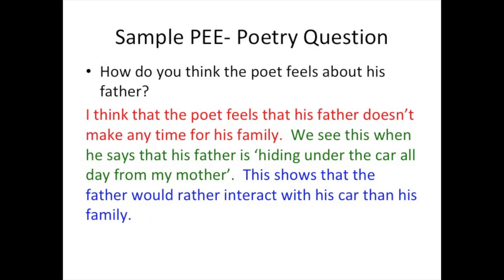Here is another sample PEE, this time for a poetry question. The question is: how do you think the poet feels about his father? The point is: I think the poet feels his father doesn't make any time for his family. The example is: we see this when he says that his father is hiding under the car all day. The explanation is: this shows that the father would rather interact with his car than his family.